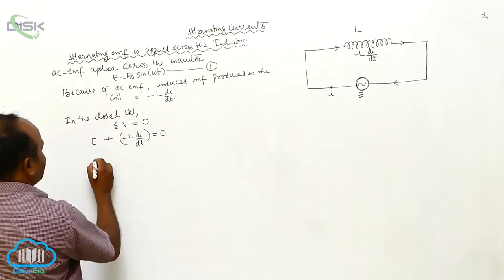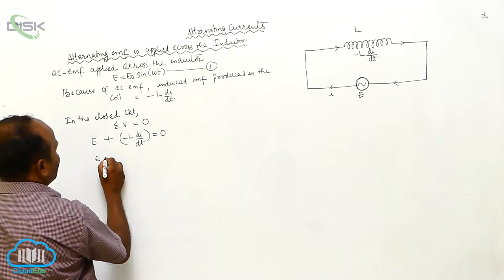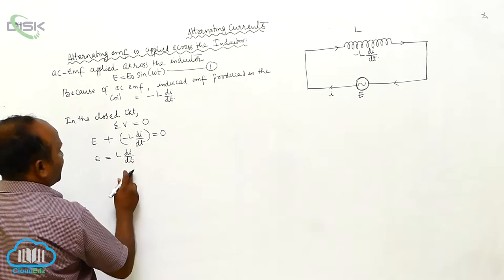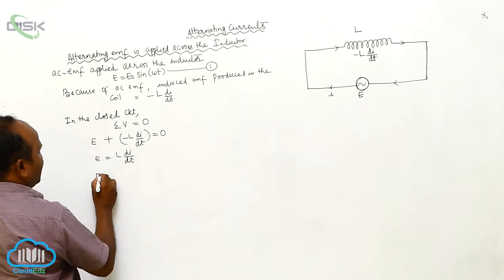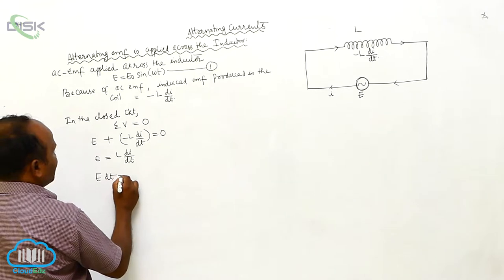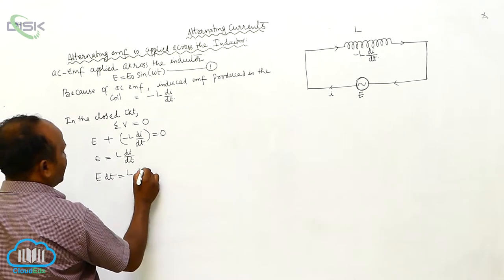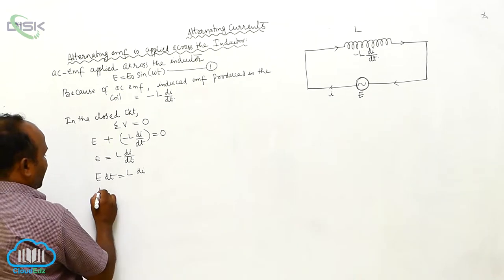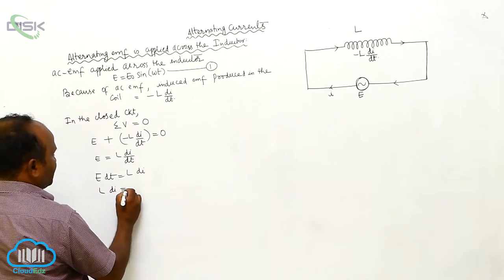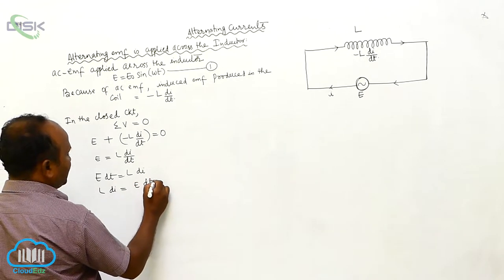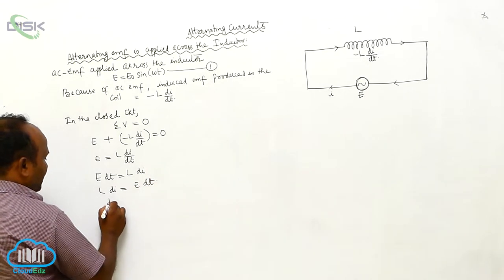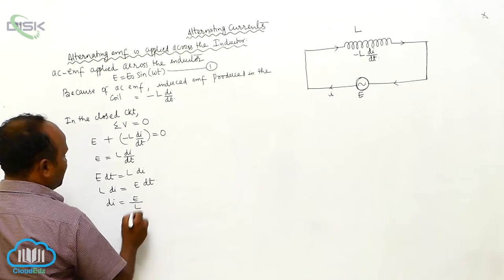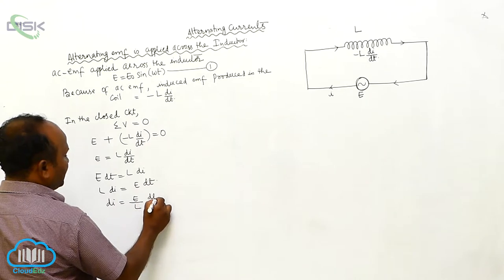In a simple calculation, E equals L dI/dt. On cross multiplication, E·dt equals L·dI. Therefore, dI equals (E/L)·dt.